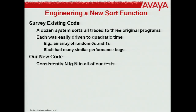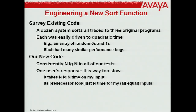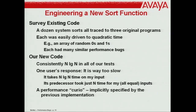The user said our O(n log n) sort was too slow because its predecessor took linear time on predominantly equal inputs. You sort often to bring together equal elements — it's a perfectly valid use case, and the previous program was really fast on that case. Our spec didn't cover it, but the user had a performance expectation implicitly set by the existence of the preceding program.